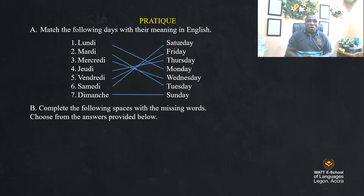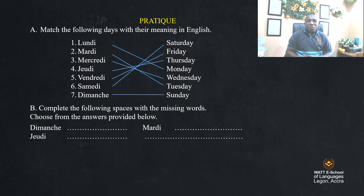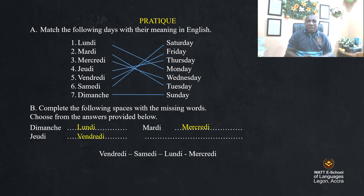Activity B: complete the following spaces with the missing words from the answers provided below. We have some days and some missing spaces. What is the first word? Lundi. The second: mardi. Then mercredi. After jeudi, what do you have? Vendredi. Give us all seven days of the week — great!